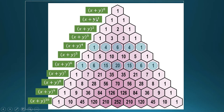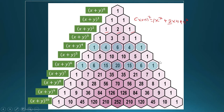Let us recall the Pascal triangle. This triangle contains the numerical coefficients when you expand the binomial (x + y) raised to an integer exponent. Any non-zero real number raised to zero is just one. (x + y) raised to one is just x + y, with coefficients one and one. The binomial expansion of (x + y) squared has numerical coefficients one, two, and one.